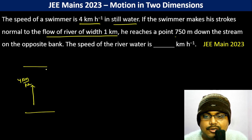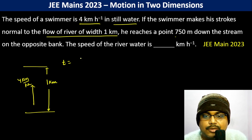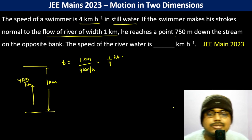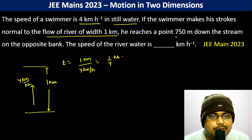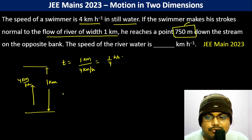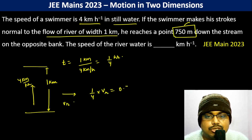The time taken will be 1 kilometer divided by 4 km/h, which is 1/4 hours. But then he reaches a point 750 meters downstream. So (1/4) × vr equals 0.75 kilometers.